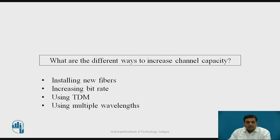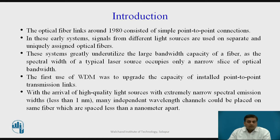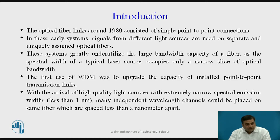The last way to increase channel capacity is by using multiple wavelengths on a single fiber, which gives rise to the wavelength division multiplexing concept. The optical fiber links around the 1980s consisted of point-to-point connections, where signals from different light sources were used on separate, uniquely assigned optical fibers.